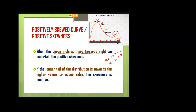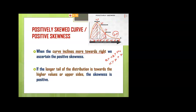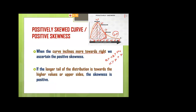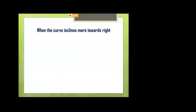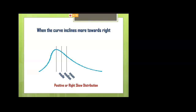Another definition of positive skewness: when the long tail of the distribution is towards the higher value or upper side, the skewness is positive. From the scores, we can conclude that more number of students scored the lowest marks. The highest frequency area shows scores of 10, 20, 30, 40 — so most students got low marks, while only a few got high scores like 60, 70, 80, 90.